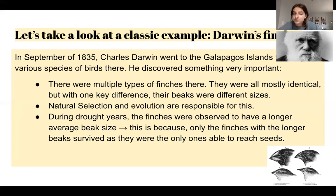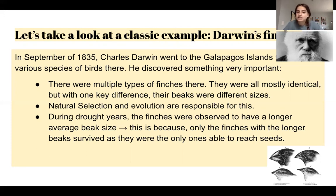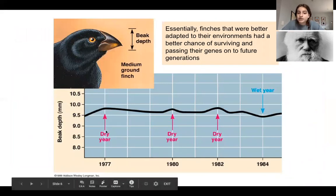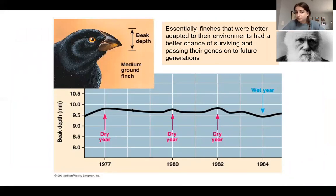Because of this, only finches with the longer beak survived, as they were the only ones able to reach the seeds. As a result, they passed down the trait for longer beak lengths to future generations, and during drought years the finches were observed to have longer average beak sizes. We can see this in the chart, where during dry years the beak depth increased. Finches that were better adapted to their environments had a better chance of surviving and passing their genes on to future generations.